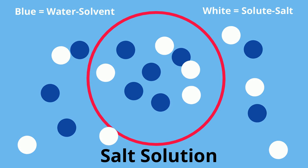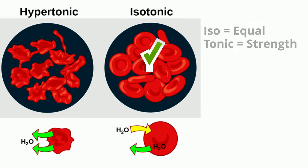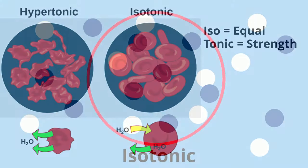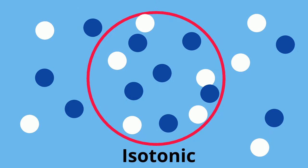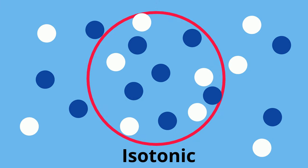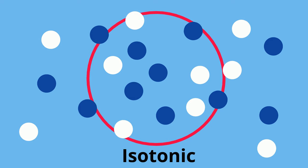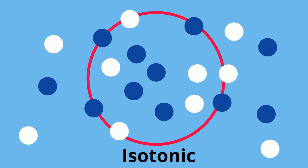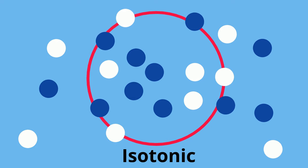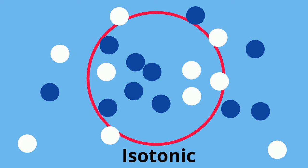An isotonic solution is equal — iso meaning equal, and tonic meaning strength. So the solute and the solvent will travel in and out of the cell equally, and the cell will stay the same. It is equal.